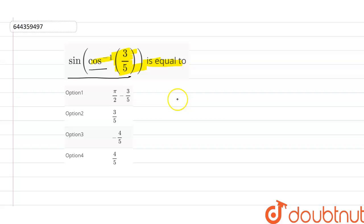Let's take cos^(-1)(3/5) equals x. So this becomes 3/5 equals cos x, and we know that cos x equals base upon hypotenuse.